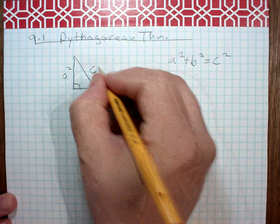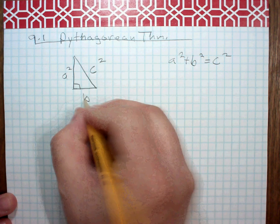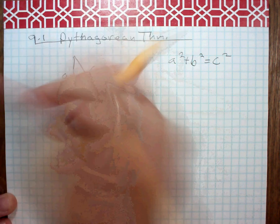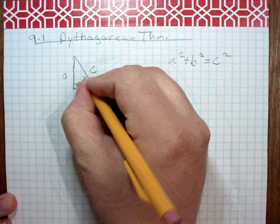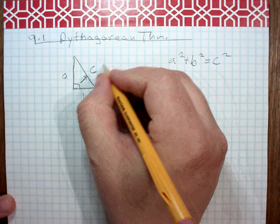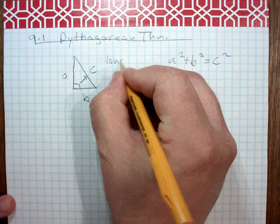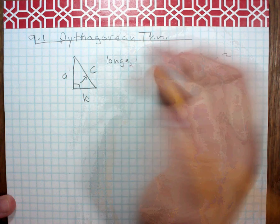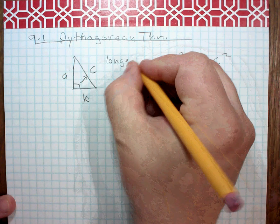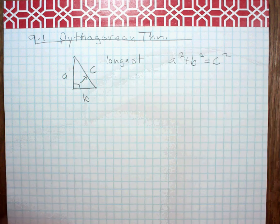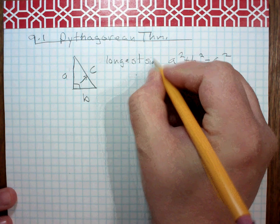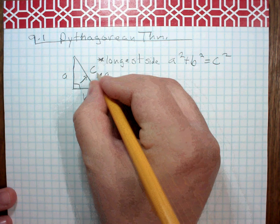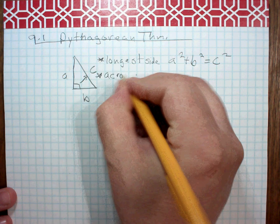Where C, actually I don't need to write that there, C is the hypotenuse, and the hypotenuse is the longest side. So C is the longest side, it's across from the 90-degree angle.